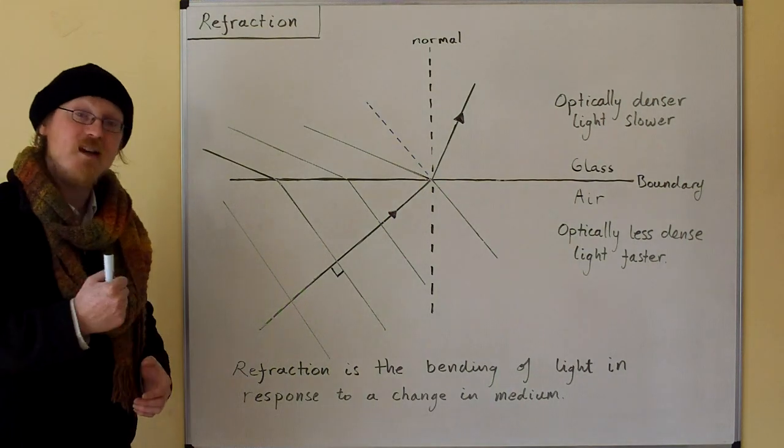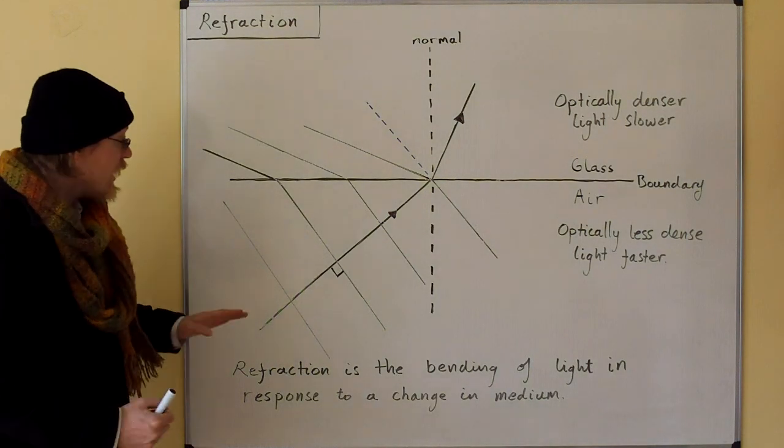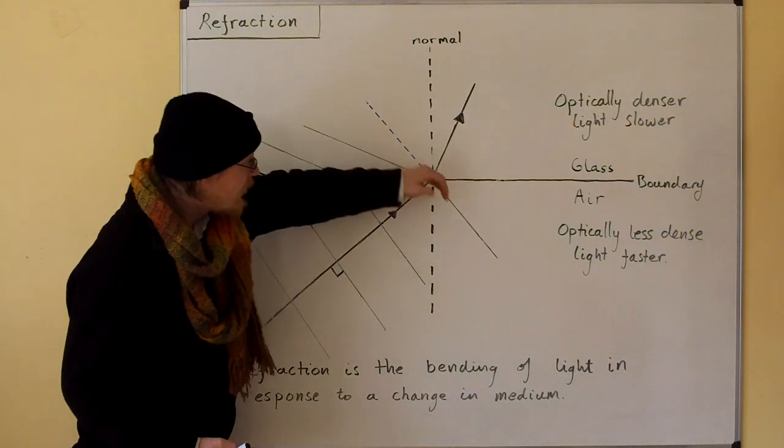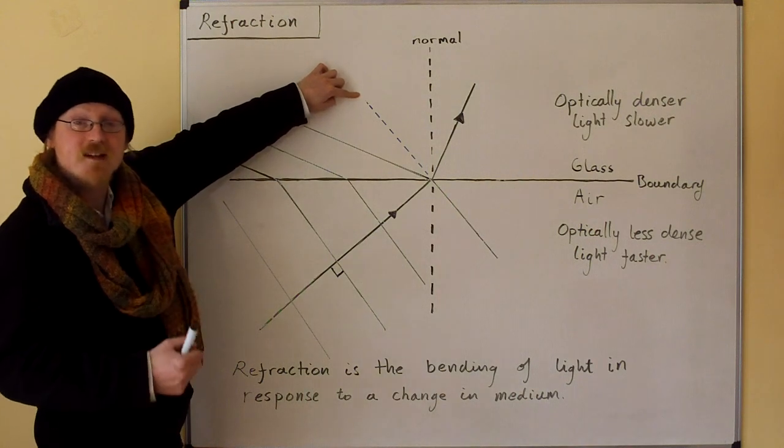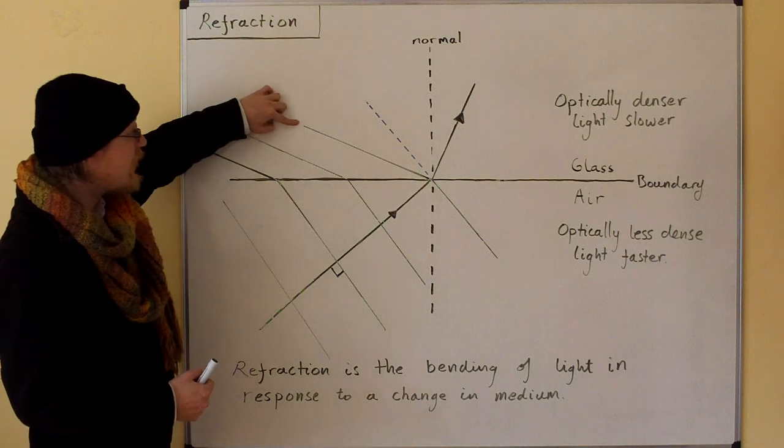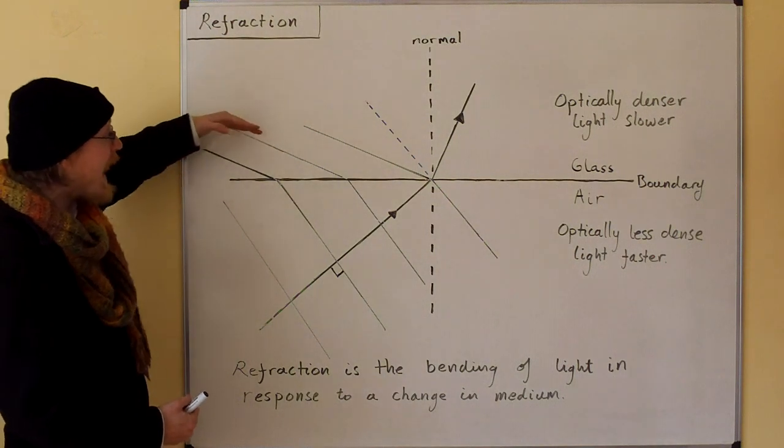So here comes the light ray. Here are the wave fronts. This is where the wave front would be if it had carried on through air, but it's moved into glass, so it's slowed down. So it's been bent backwards, and this bending backwards of the wave fronts bends the light round towards the normal.